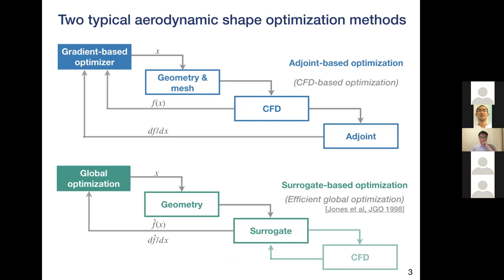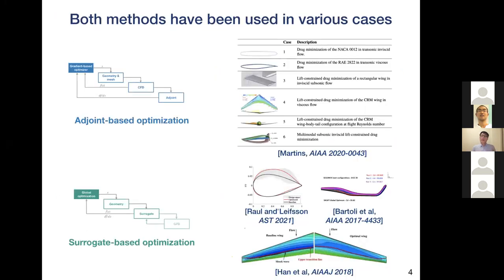The other kind is called surrogate-based optimization, where the objective functions and constraints are evaluated by the surrogate, not directly by CFD. The surrogate is trained using CFD data, and since it's very cheap to evaluate performance using the surrogate, we have freedom in selecting the optimization algorithm and can perform global optimization. The most popular form of surrogate-based optimization is Efficient Global Optimization, which has been used in airfoil design, wind turbine design, and various aerodynamic configuration designs.